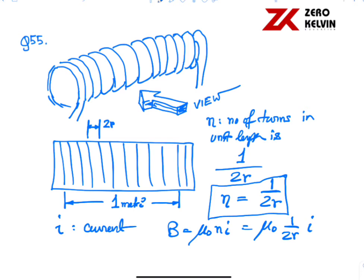In problem 55, we can substitute the values. Mu 0 is 4 pi multiplied by 10 to the power minus 7 into 1 by 2R. R is 0.5 millimeters, so here you get 1000 into I, which is given as 5 ampere. So here you get the value.